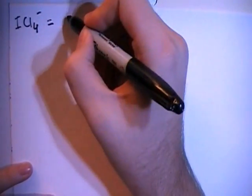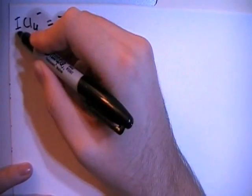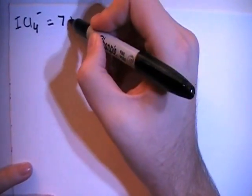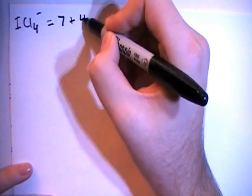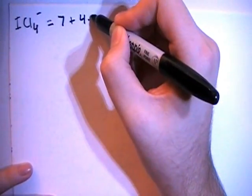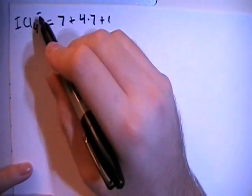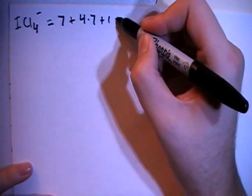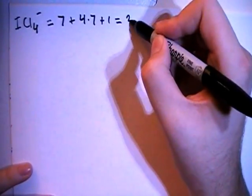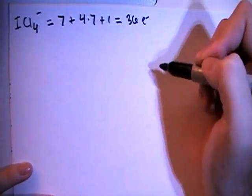And that's going to give us 7 valence from the iodine plus 4 chlorines each with 7 valence electrons of their own plus 1 more electron because of the minus 1 charge for a total of 36 valence electrons.